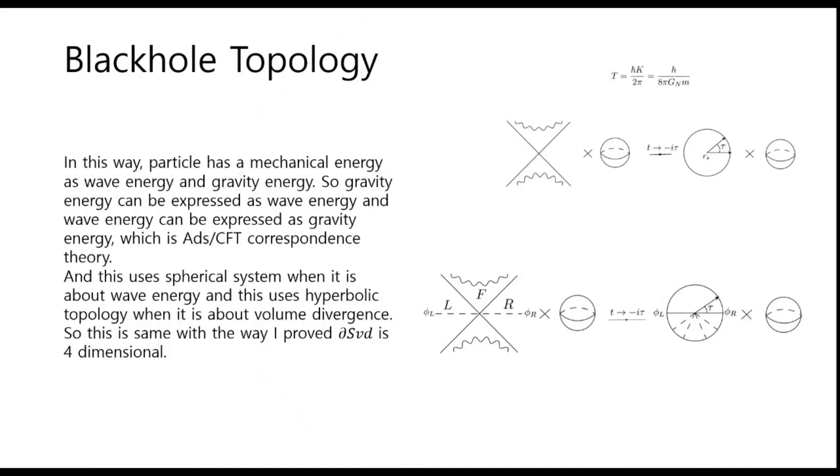In this way, a particle has a total energy as wave energy and gravity energy. And wave energy can be expressed as gravity energy, which is AdS-CFT correspondence theory. And this uses spherical system when it is about wave energy, and this uses hyperbolic topology when it is about volume divergence. So this is the same with the way I proved spacetime is 5-dimensional.